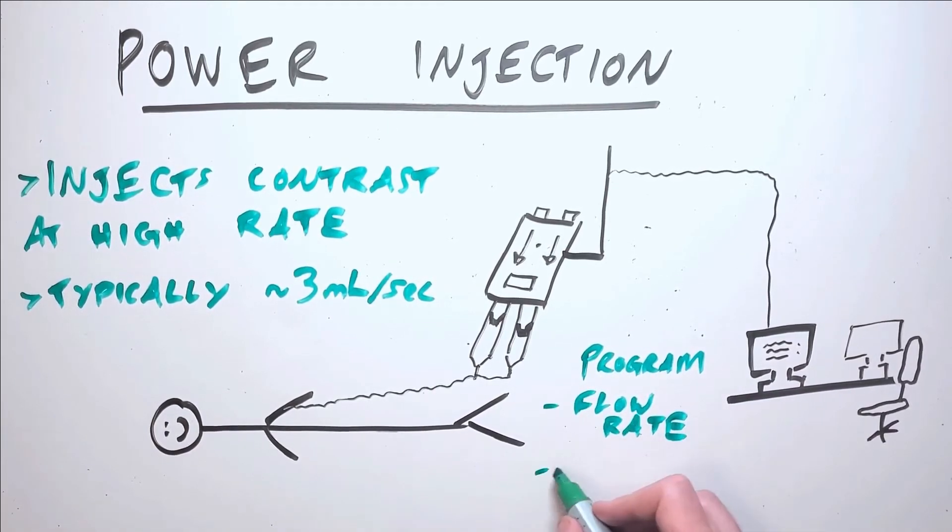As well as varying the flow rate, the total contrast volume required can vary as well depending on the patient size, the body area being scanned, and the type of scan being performed.